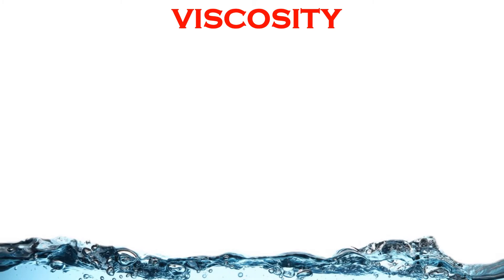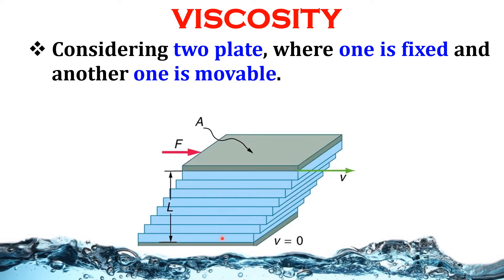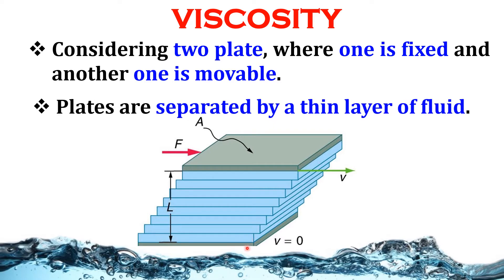We are going to briefly discuss about viscosity. Consider two plates where one is fixed and another one is movable. The bottom plate is fixed and the top plate is movable. The two plates are separated by a thin layer of fluid. F is the force required to move the plate and A is the surface contact area between the fluid and plate.